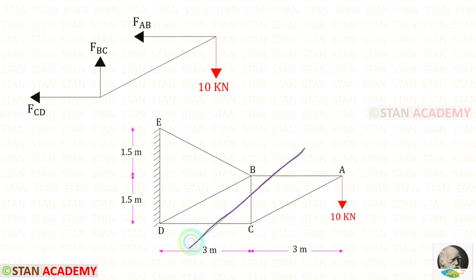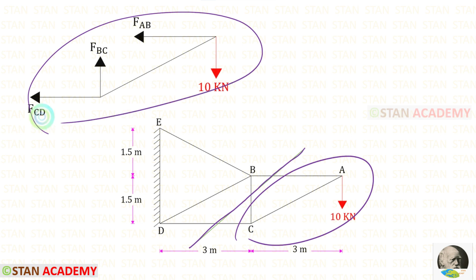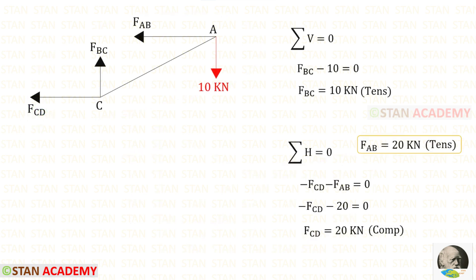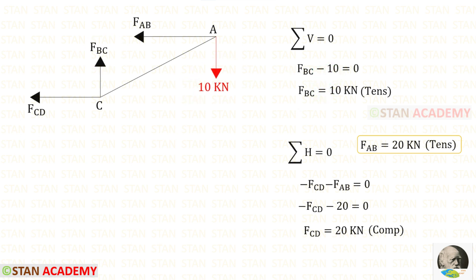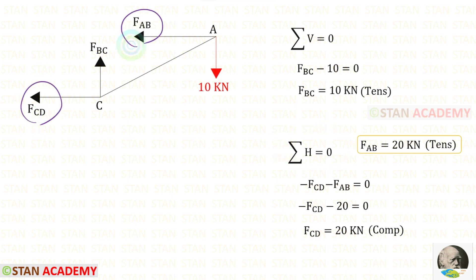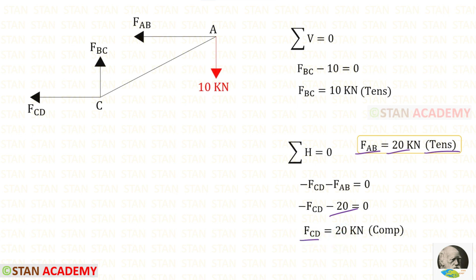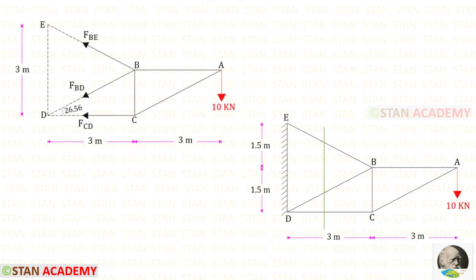Now I am going to make the second section and take this part for analysis. Applying sigma V equals 0: FBC is acting upwards so it is positive, and 10 is acting downwards so it is negative. For FBC we get a positive value, meaning it is tensile. Applying sigma H equals 0: FCD and FAB are both acting towards the left, so both are negative. We have already found FAB = 20 and it is tensile. For FCD we get a negative value, meaning it is compressive.